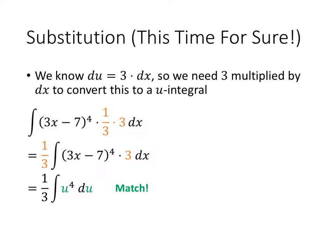Since those two variables match, we can continue and actually take our antiderivative. So the antiderivative of u to the 4th with respect to u is 1 5th u to the 5th. And that gives us an antiderivative of 1 15th, 3x minus 7 to the 5th, plus c. And we can take a derivative there, and we'll see that that actually does give us our original function of 3x minus 7 to the 4th.